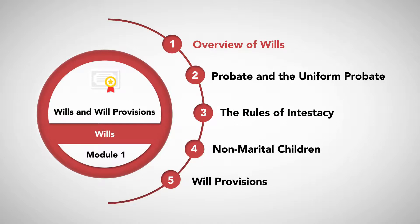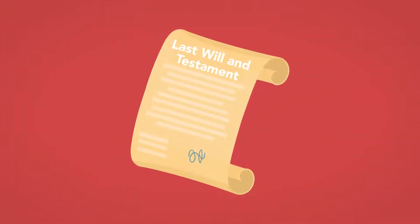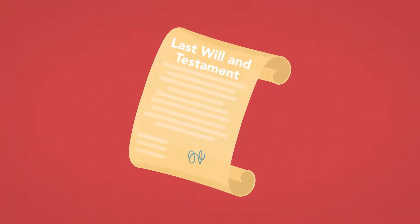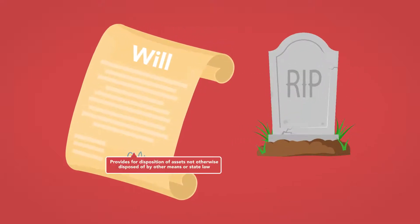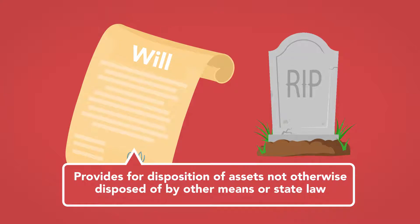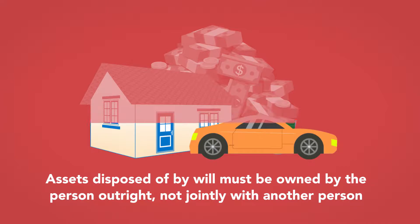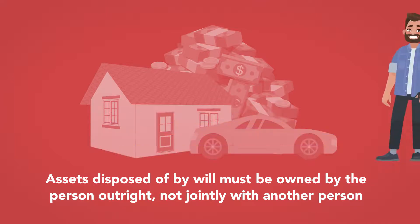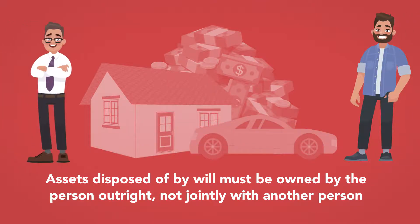A last will and testament, usually simply referred to as a will, is a document effective at a person's death that provides for disposition of assets not otherwise disposed of by other means or state law. Assets disposed of by will must be owned by the person outright, not jointly with another person.